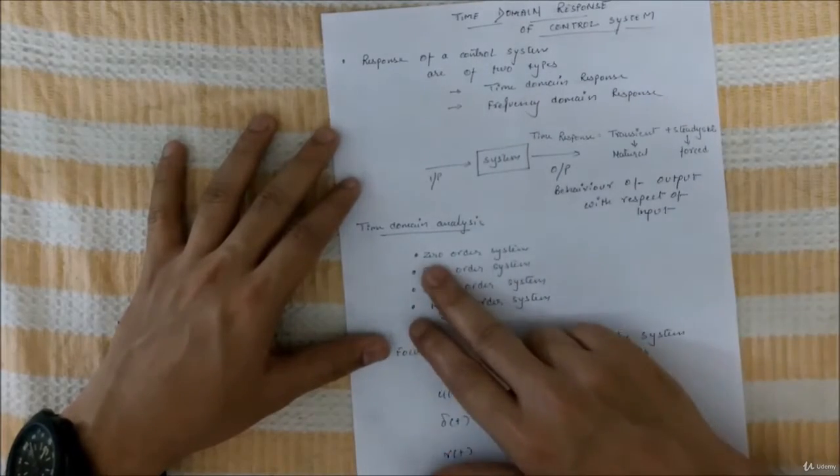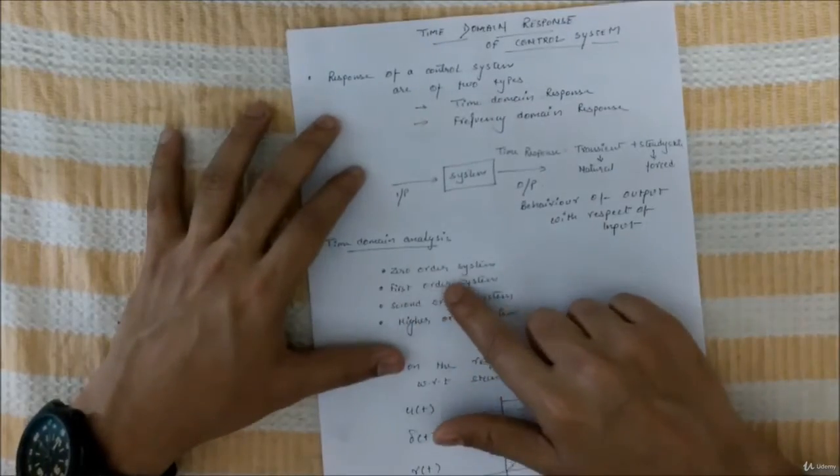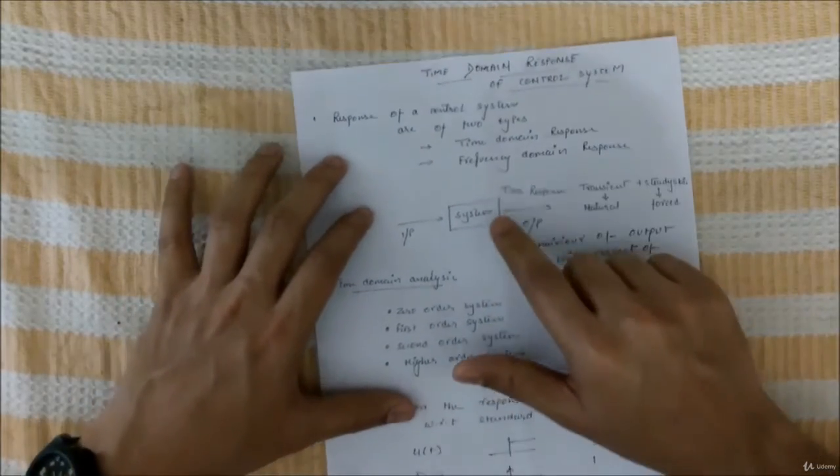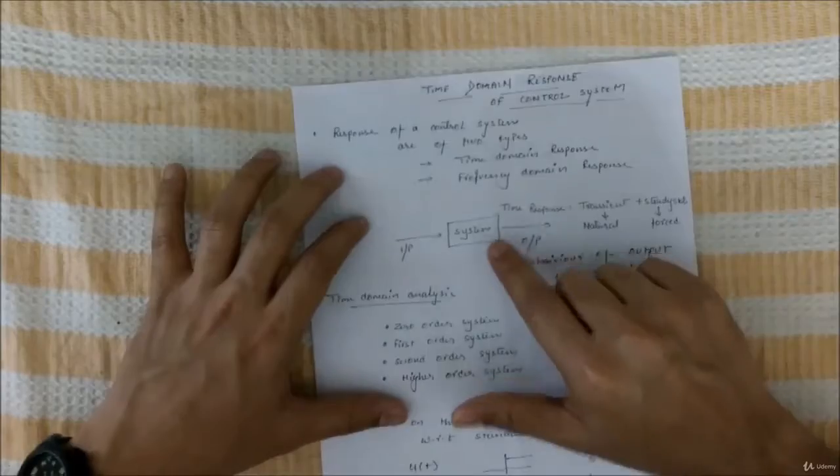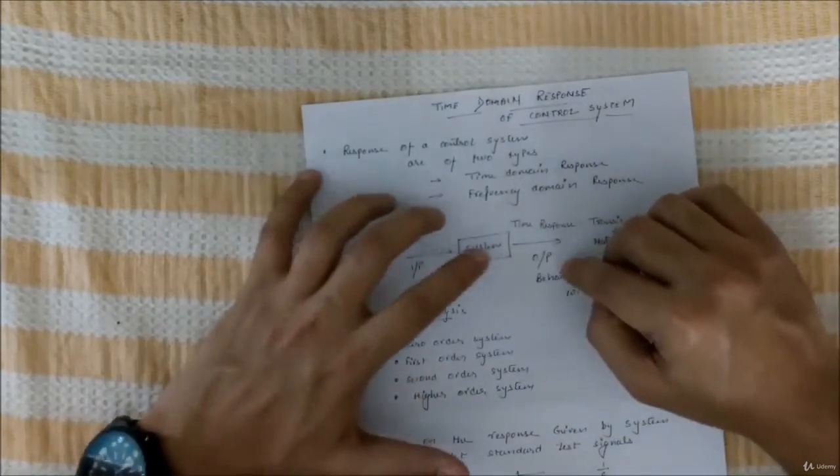For time domain analysis, zero order system first we'll take. The system will be zeroth order, then first order, then second order and higher orders. We'll subject it to this input and we'll get an output.